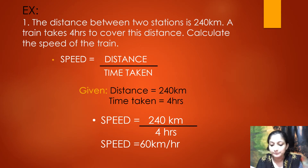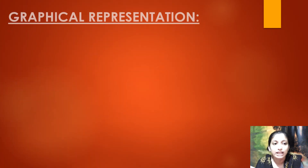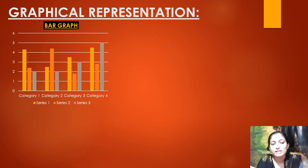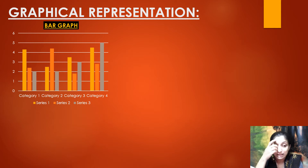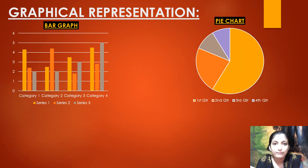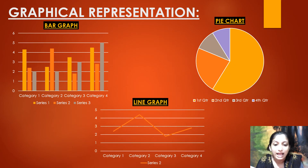Now let us see how we can represent this data with the help of a graph. The first type is a bar graph — it is named so because bars are used to represent the scale on the x-axis and y-axis. Then we have a pie chart, named because it looks like a pie. We also have a line graph, where data is represented with the help of a single line.